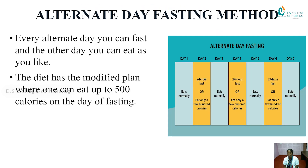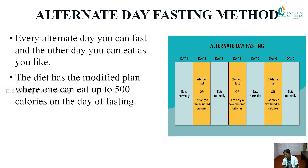The alternative day fasting method: every alternative day you can fast, and the other day you can eat as you like. The modified plan allows eating up to 500 calories on the fasting day. As shown in the picture, day 1 you eat normally, day 2 is a 24-hour fast or eating only a few hundred calories, day 3 you eat normally, day 4 is again a 24-hour fast or a few hundred calories. This alternates so that one day you are eating and the next you are fasting.